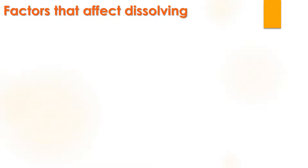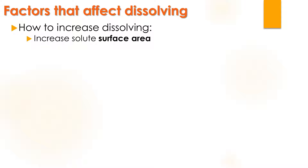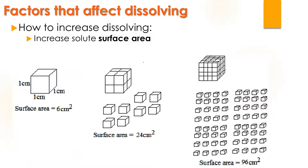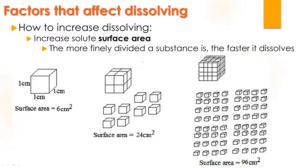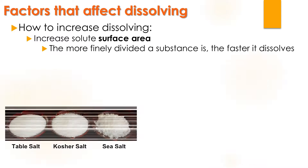Some factors that will affect whether or not something's going to dissolve — here's how you could increase it. You could increase the solute surface area. If you were to divide a cube into smaller cubes, the surface area increases, and even smaller cubes where the surface area is way higher. These ones are going to dissolve faster than the one with a smaller surface area — 6, 24, to 96 square centimeters. The more finely divided a substance is, the faster it's going to dissolve.